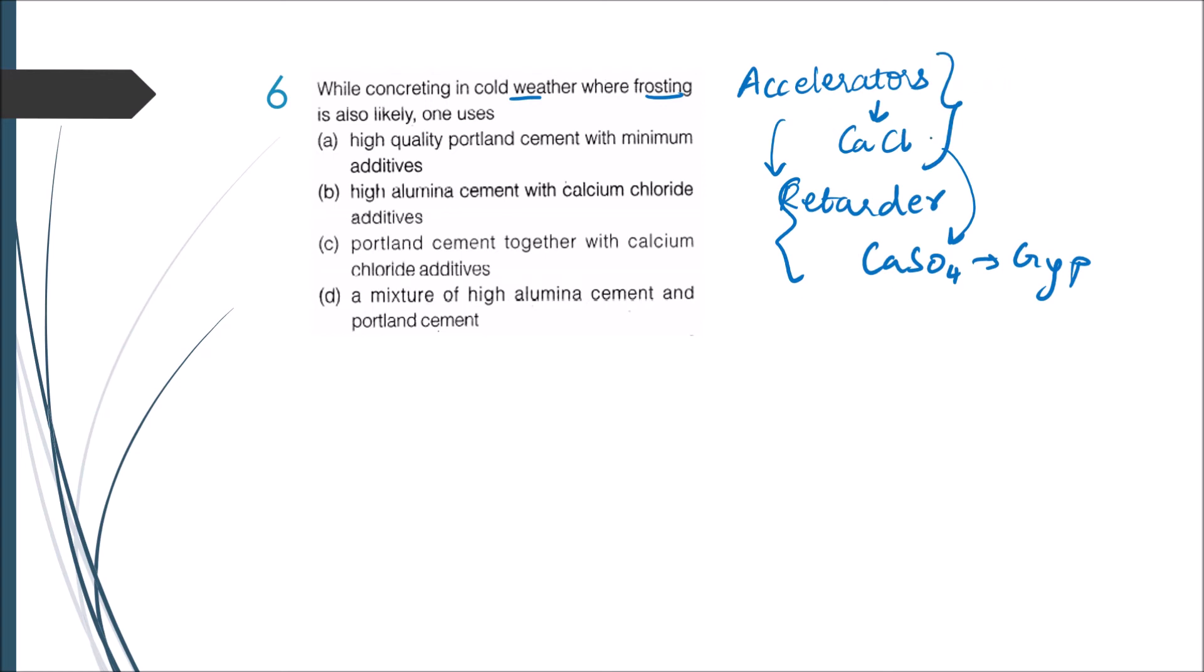Therefore we will use calcium chloride when we are going for cold weather concreting. In the options I can see that two options - option B and C - they have calcium chloride. In these two things I have Portland cement with calcium chloride and high alumina cement with calcium chloride. We know that high alumina cement will perform better in cold weather conditions, therefore we are going for high alumina cement with calcium chloride additives.